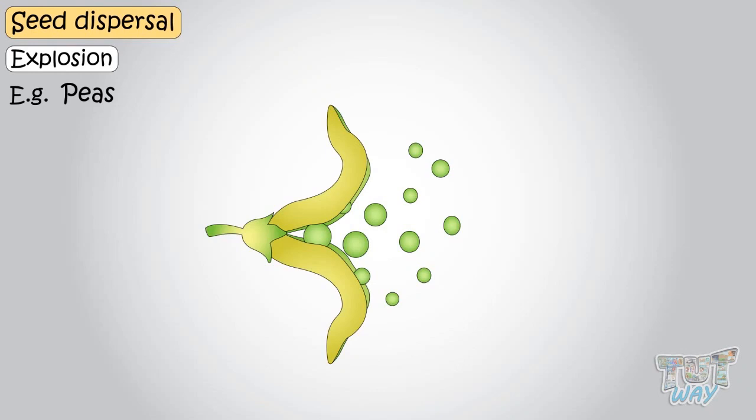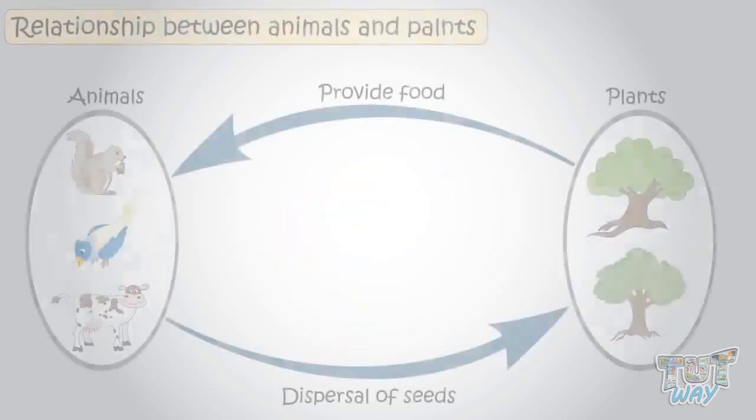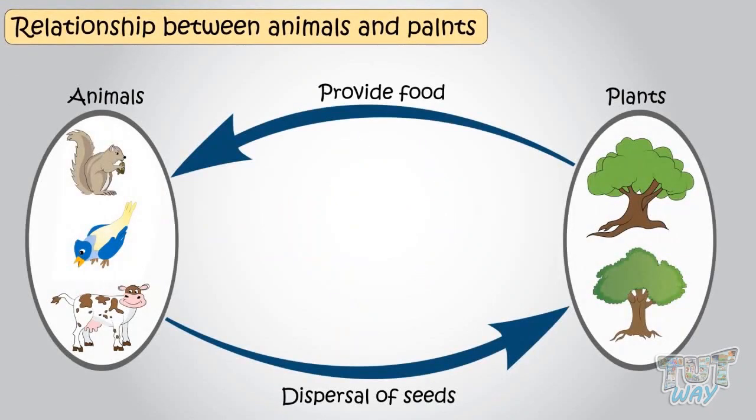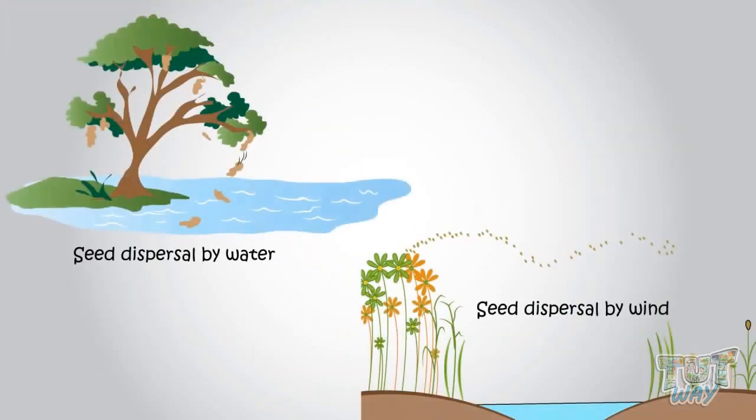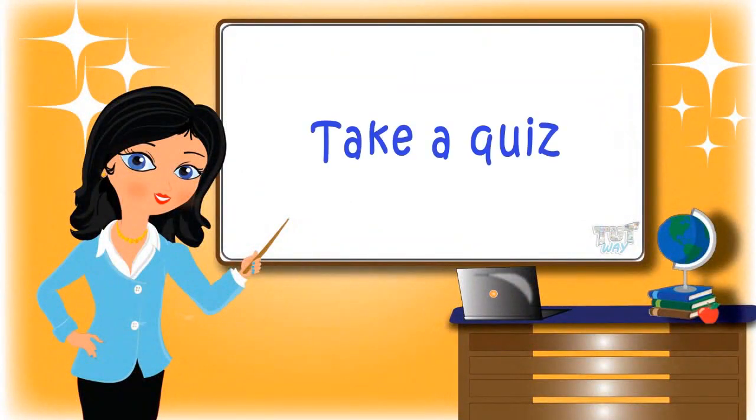So kids, today we learned a lot about how plants disperse, or spread their seeds to distant locations, in order to grow new plants. And how animals and plants depend on each other. And how water, and wind too, helps plants disperse their seeds. Now go ahead and take a quiz to learn more! Bye-bye!